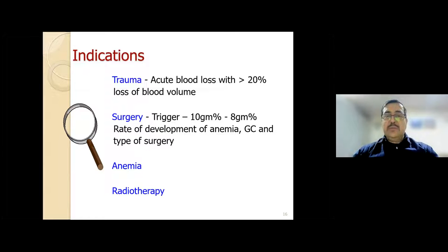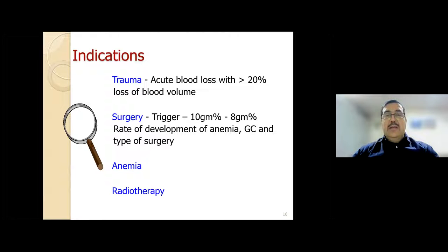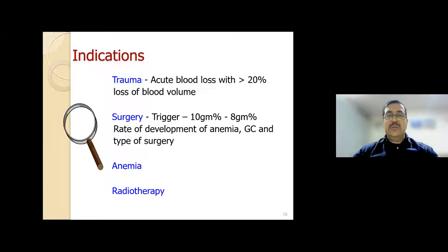Earlier the transfusion trigger used to be 10 g% a few years back, but it has now been reduced to 7 or 8 g%. Think of the enormous difference this makes to so many patients. It is not just the trigger that matters—the rate of development of anemia, general condition, and type of surgery are several variables that decide whether a patient needs transfusion or not.